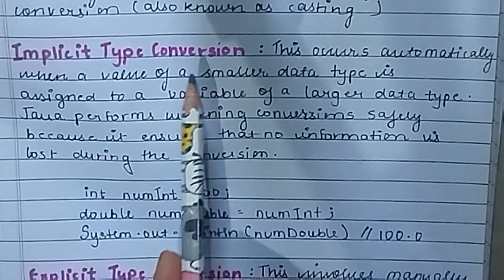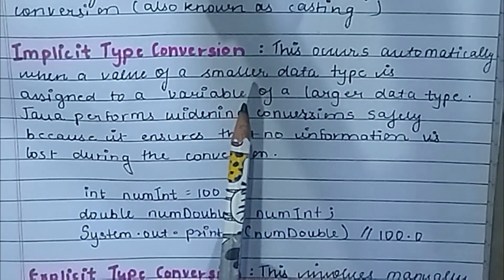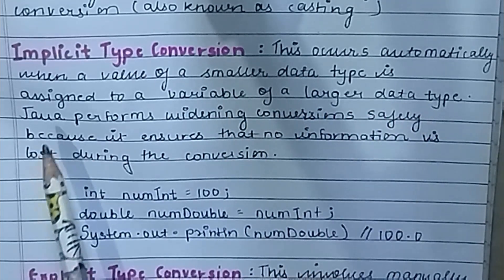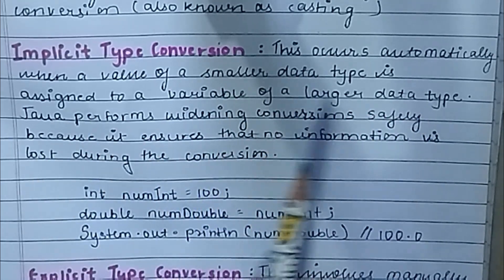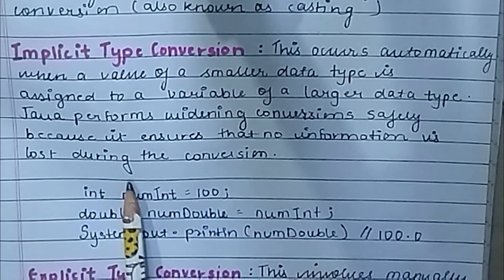Implicit type conversion occurs automatically when a value of a smaller data type is assigned to a variable of a larger data type. Java performs widening conversions safely because it ensures that no information is lost during the conversion.